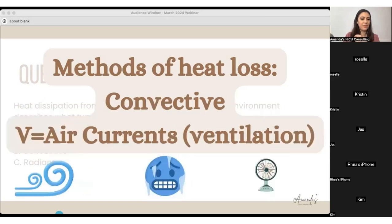Then we have convective with a V. So you can think of air currents or ventilation. Convective heat loss is if you're hot and you have a fan for yourself, you're trying to decrease heat from convective heat loss. When we're resuscitating babies in the delivery room, we want to have the side rails up to protect that baby from convective heat loss from air currents hitting the baby. So think V, ventilation, air currents, however it can make sense to you. Convective is those air currents or that ventilation that's happening in the room.